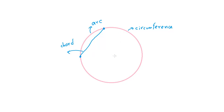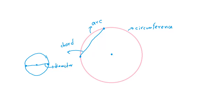If we have a chord that passes through the center of the circle, that chord is called the diameter. Half the diameter is the radius — the length from the center to the circumference — and it is the same throughout, no matter where you measure from the center to the circumference.